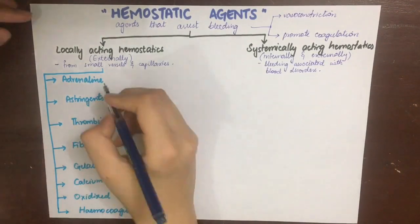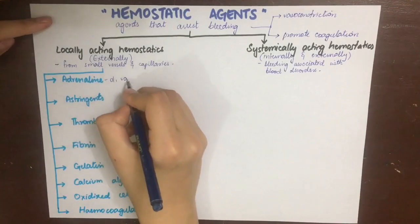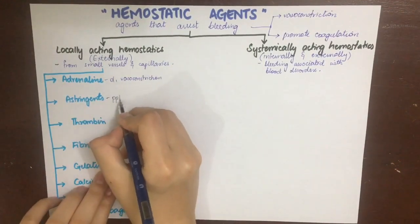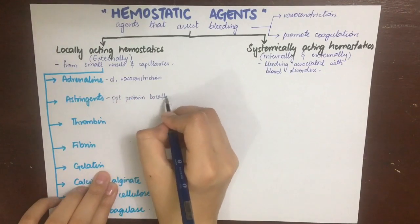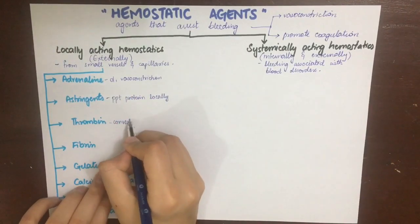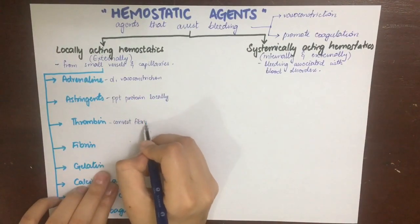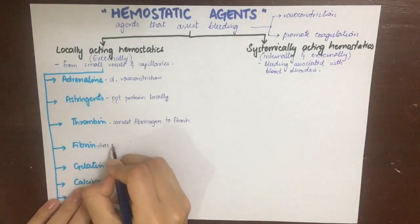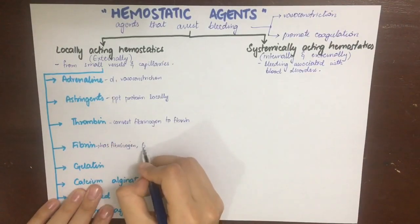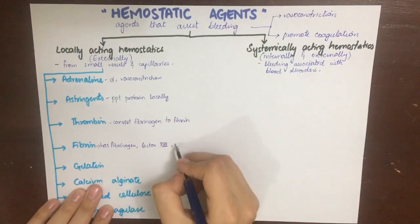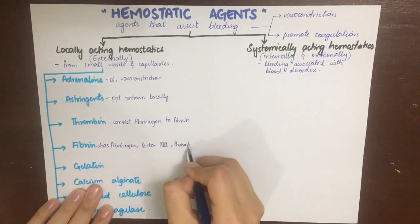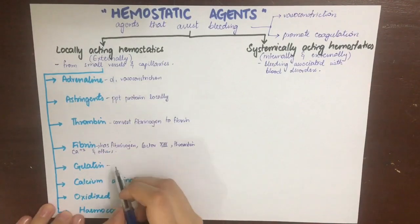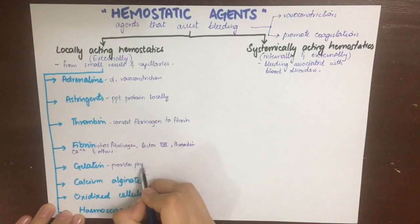Adrenaline causes alpha-1 vasoconstriction and thus stops the bleeding. Astringents precipitate the proteins locally to stop bleeding. Thrombin converts fibrinogen to fibrin. Fibrin itself contains fibrinogen, factor 8, thrombin, calcium, and other clotting factors, and thus contributes to coagulation and clot formation.